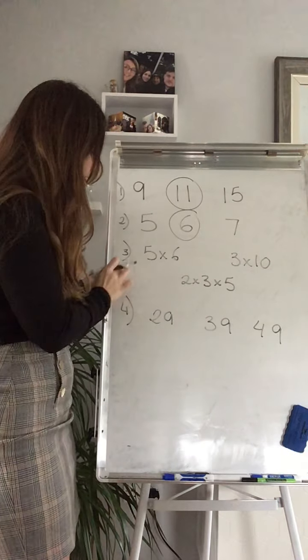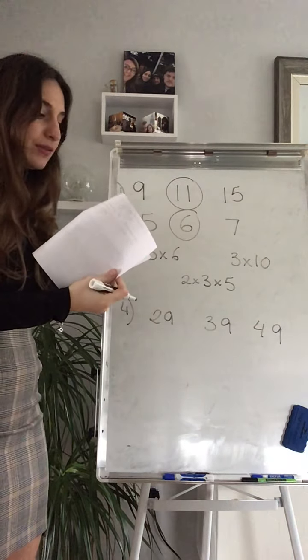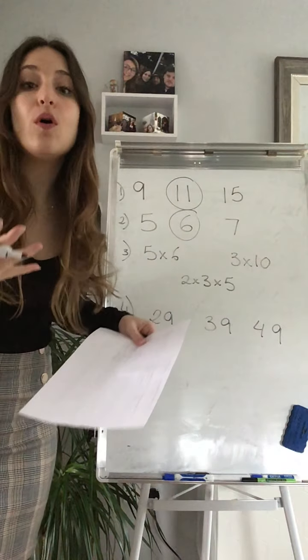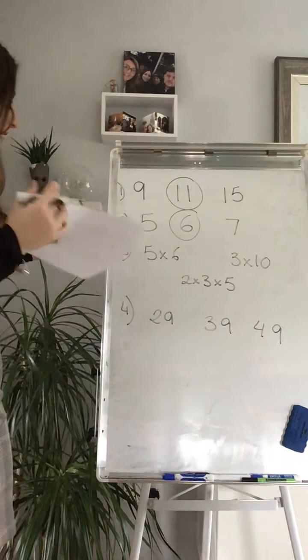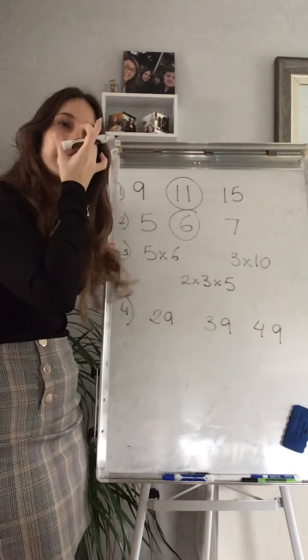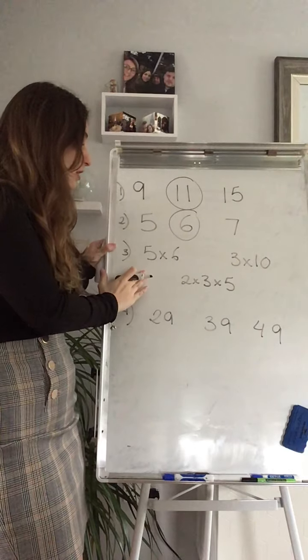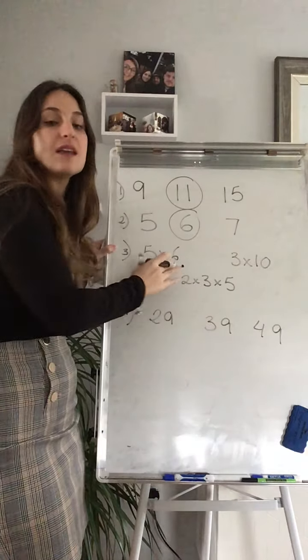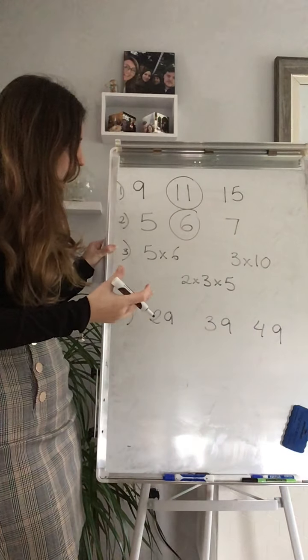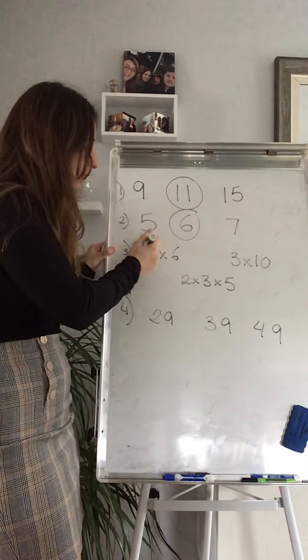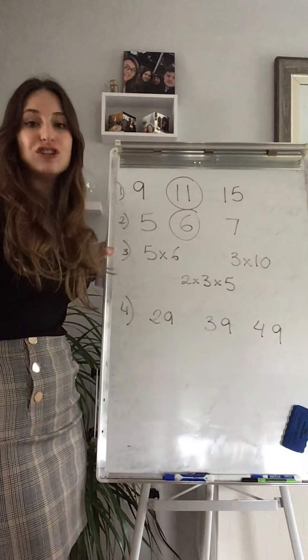We have B, B so far. Let's go for number 3. Number 3 you have to find 30 as a product of, and you have to use prime factors, prime numbers as factors. So let's look at my first option. 5 times 6, yeah? 30. But then 5 is a prime number but 6 is not a prime number. So A cannot be.